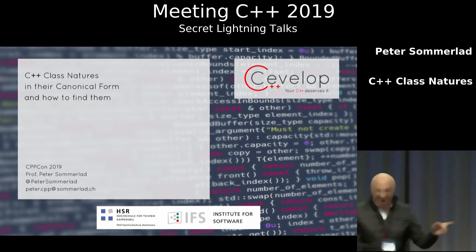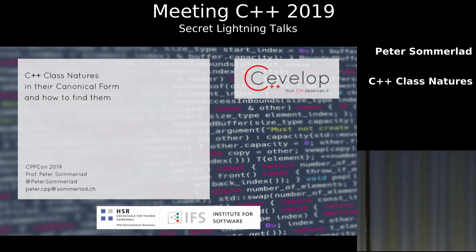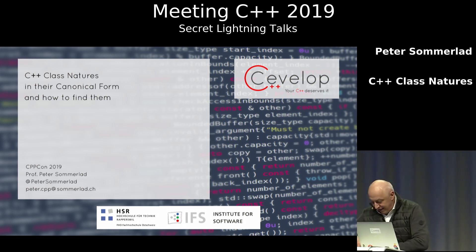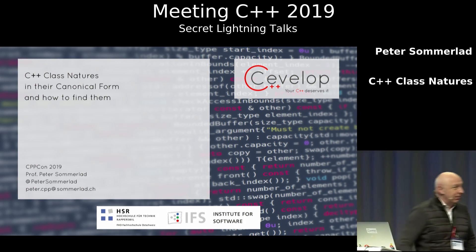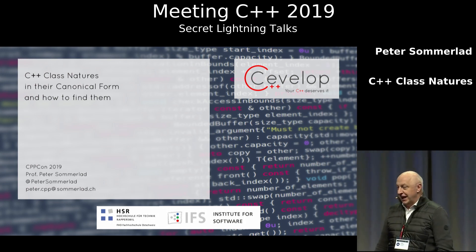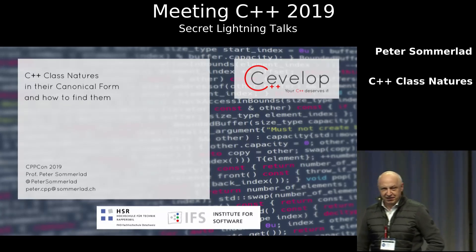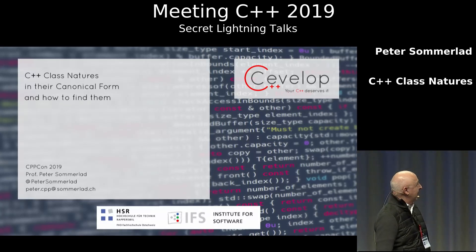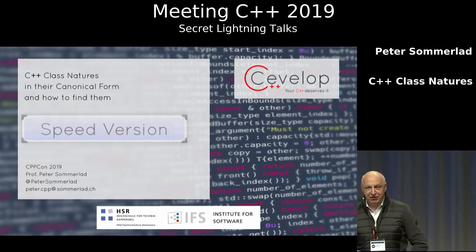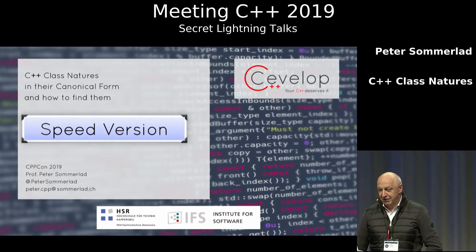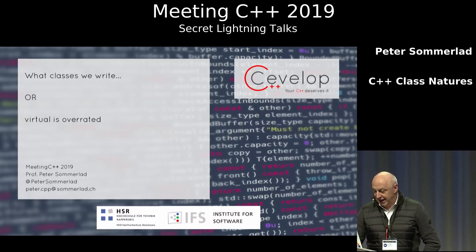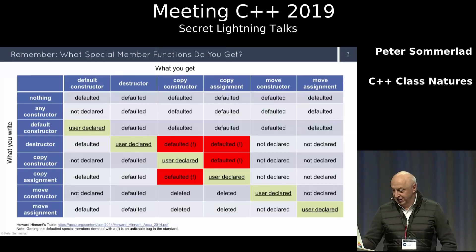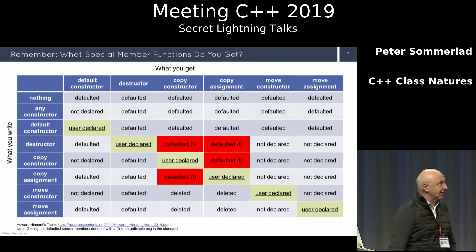Good afternoon everybody. I made the mistake of listening to a professor colleague when figuring out the title of my CppCon talk this year, and I called it 'C++ Class Natures in Their Canonical Form and How to Find Them.' There are many strange words in there, so I like to give you a speed version which is actually titled 'What Classes We Write' and 'Virtual Is Overrated.'